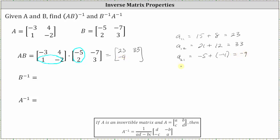Now to find the last element in row two, column two, we multiply row two in the first matrix and column two in the second matrix. We have one times negative seven, which is negative seven, plus negative two times three, which is negative six. Here we have a sum of negative 13.